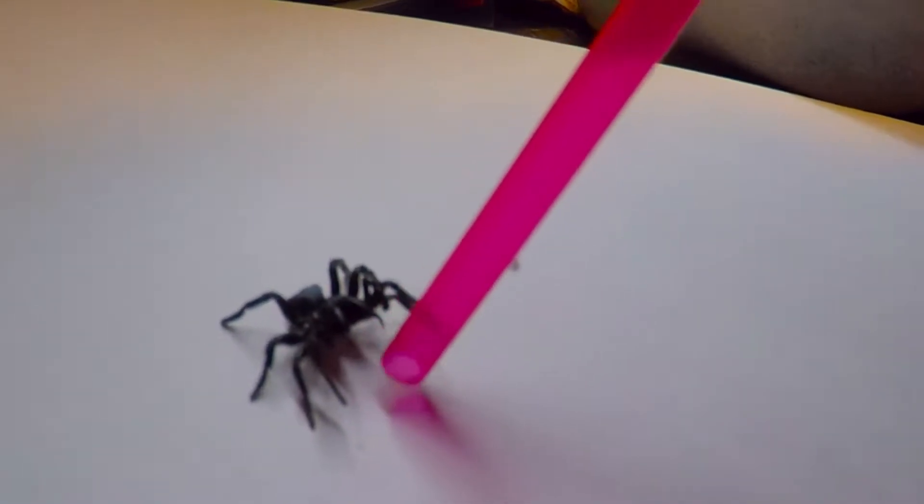I don't know if they're quite the downward fangs of a funnel web. It's not a male funnel web because it doesn't have the second front leg spur on it.